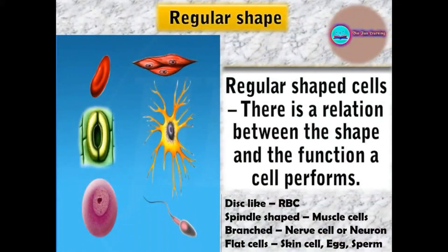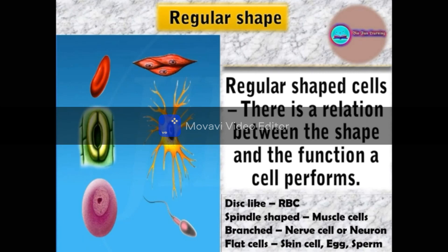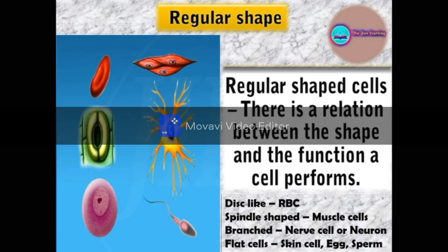For regular shapes, there is a relation between the shape and the function of the cell. For example: disc-like RBCs; spindle-shaped muscle cells (spindle means long and pointed at both ends); branched nerve cells or neurons, which receive and transfer messages and help control and coordinate the working of different parts of the body; flat skin cells; oval egg cells; elongated sperm cells, etc.